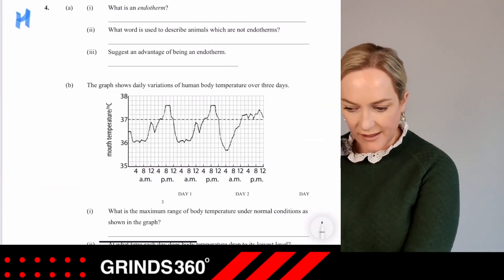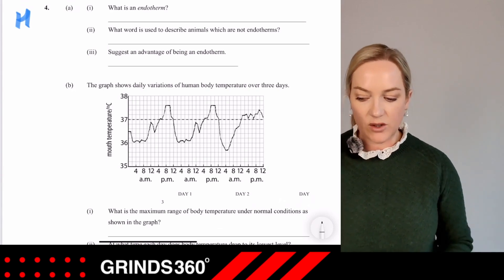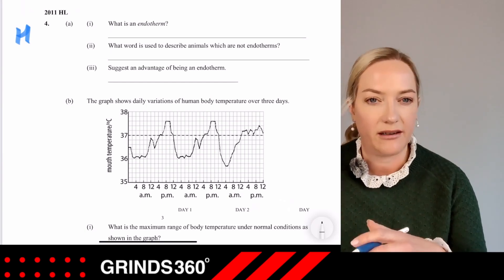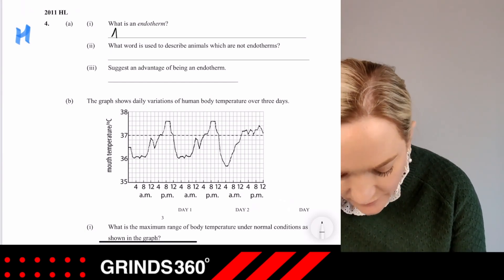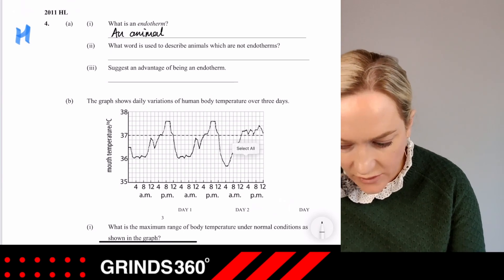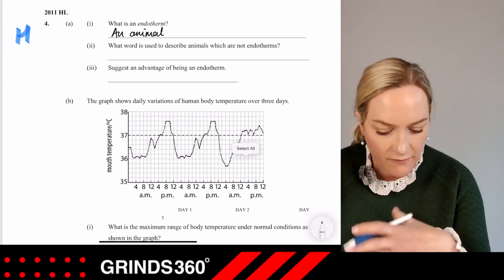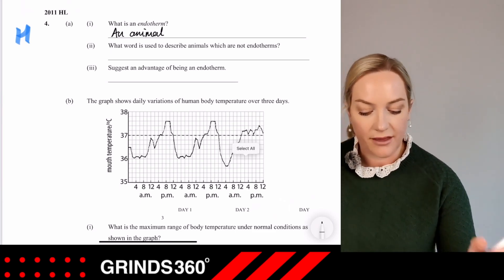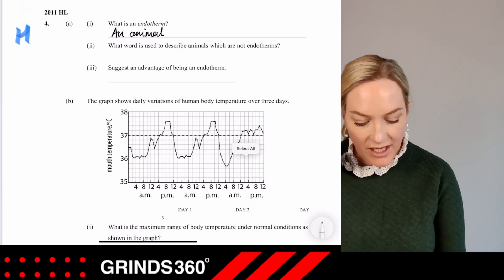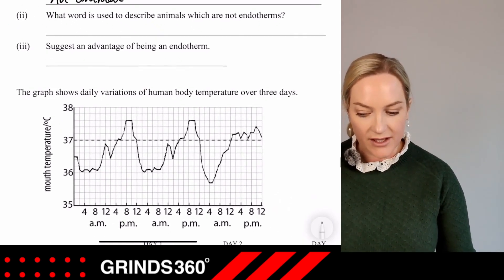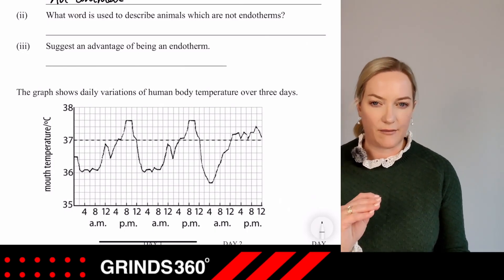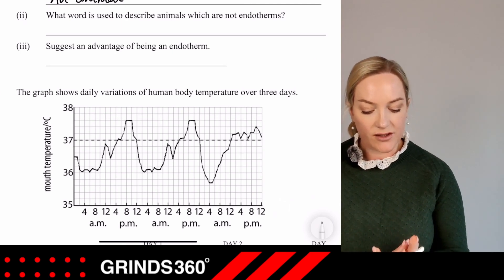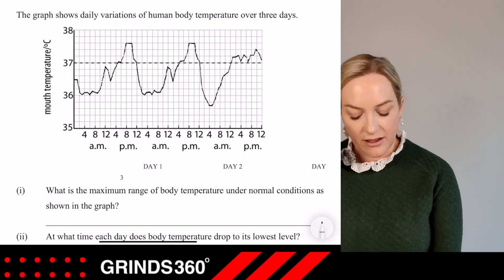From the 2011 exam: what is an endotherm? Note the answer given here describes animals whose body temperature varies with environmental temperature — that is actually the definition of an ectotherm. The word used to describe animals who are not endotherms is ectotherm. An advantage of being an endotherm is that the body temperature is always suitable for enzyme action.